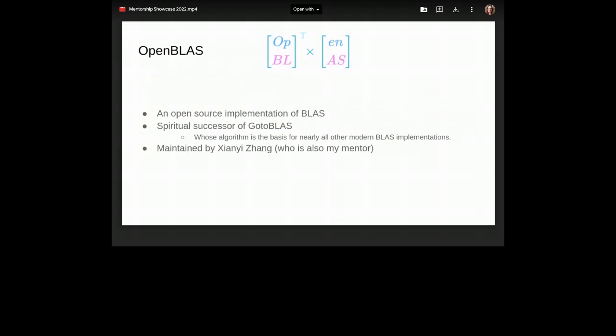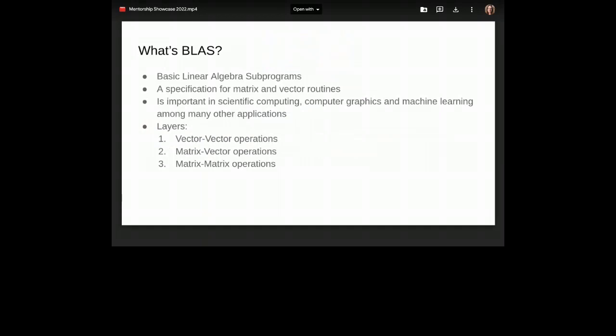And that's becoming increasingly important now, in my view, on how we consume power and the role of computation and the effect it's having on the climate. So I think performance engineering is great. And what I spent my time performance engineering was working on a project called OpenBLAS. And OpenBLAS is an open source implementation of BLAS. It's the spiritual successor of GotoBLAS. And GotoBLAS just so happens to be the BLAS implementation that established the algorithm that most other modern implementations of BLAS use. And OpenBLAS is maintained by Xianyi Zhang, who also happens to be my mentor for this mentorship.